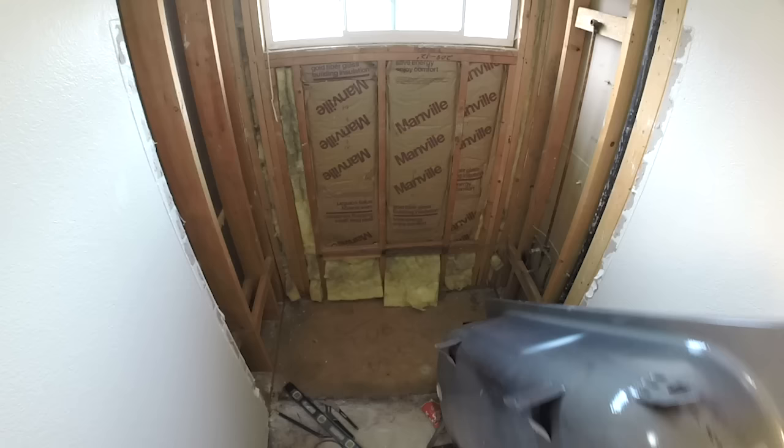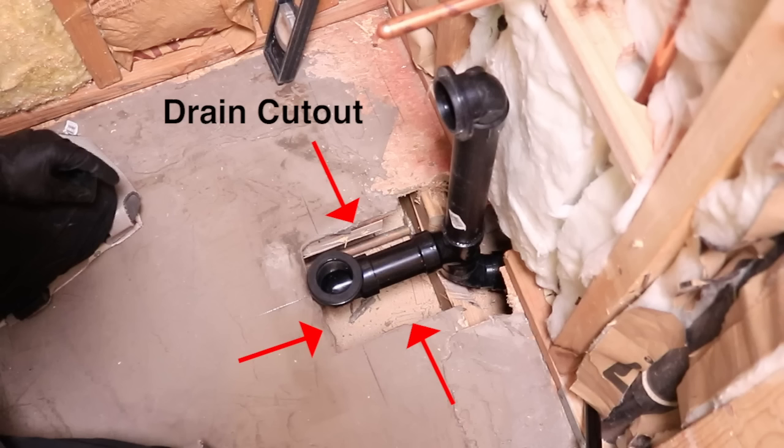Now you can prep for the installation of the new tub. So first you're going to want to make sure the cutout for the drain is the proper size and is in the proper location according to the installation instructions that came with your new bathtub. Make any adjustments as necessary.